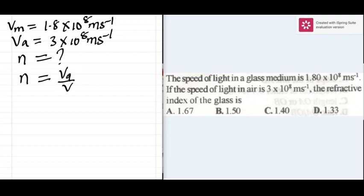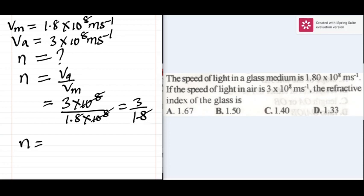over the speed of light in the medium. That would be 3 times 10 to the 8 over 1.8 times 10 to the 8. You can get rid of that, now left with 3 divided by 1.8.